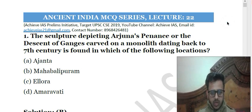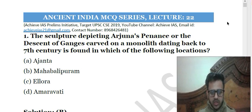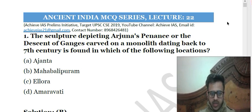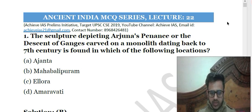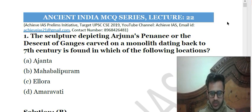The first question: the sculpture depicting Arjuna's Penance or the Descent of Ganges, carved on a monolith dating back to the 7th century, is found in which of the following locations? The correct answer is Mahabalipuram — it is located in Mahabalipuram. The solution is B.